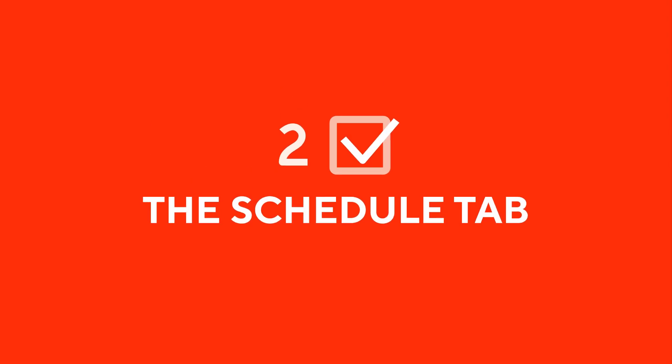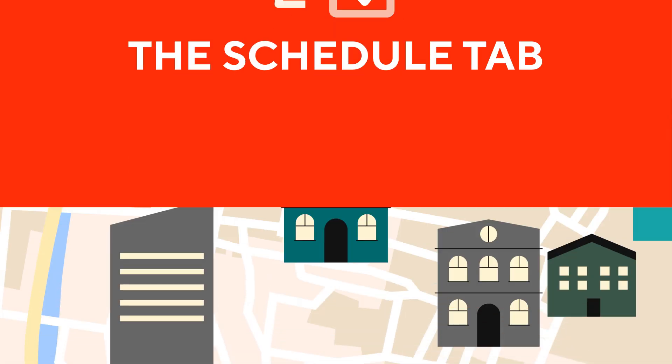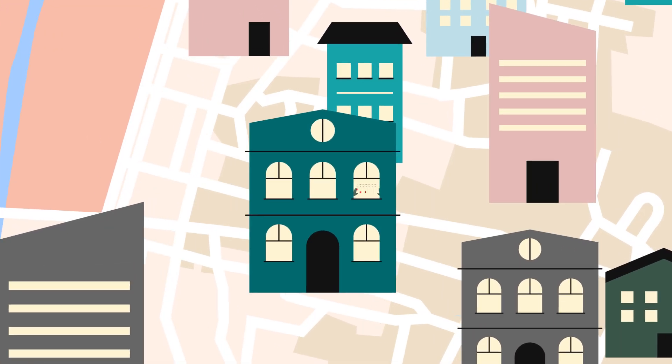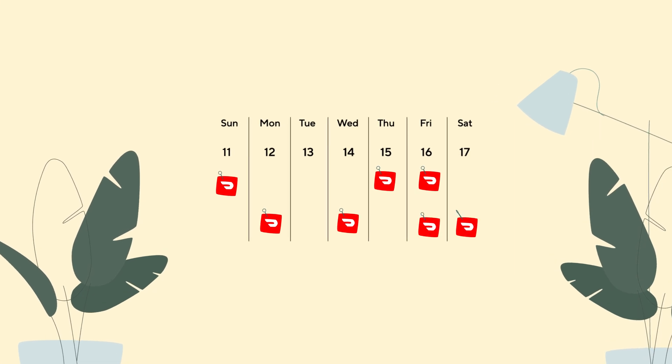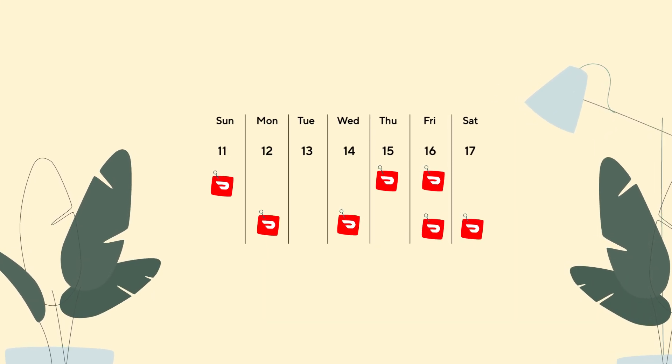Chapter 2: The Schedule tab. The Schedule tab allows you to plan ahead of time by scheduling a dash when and where you want, giving you the control and flexibility to make dashing work for you.